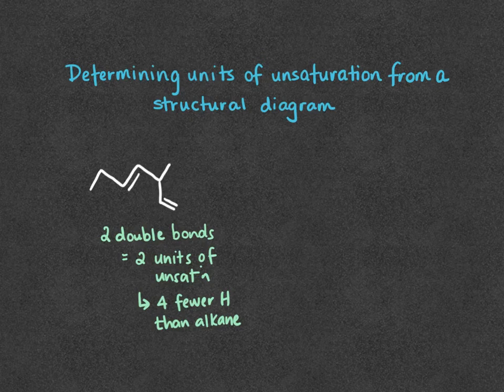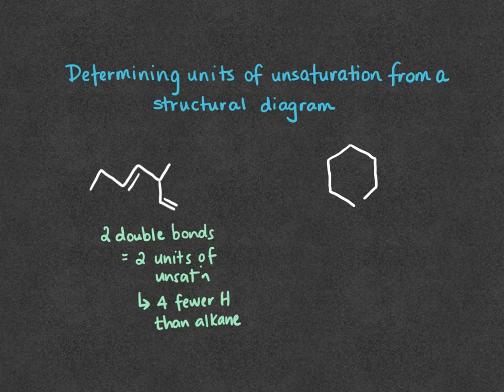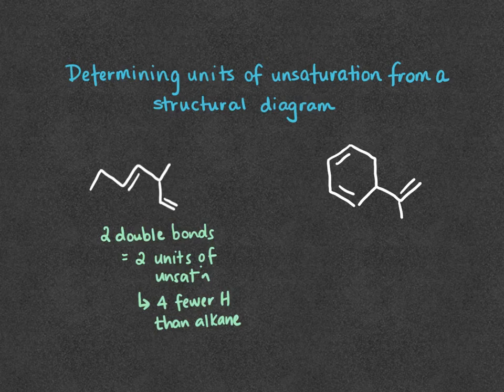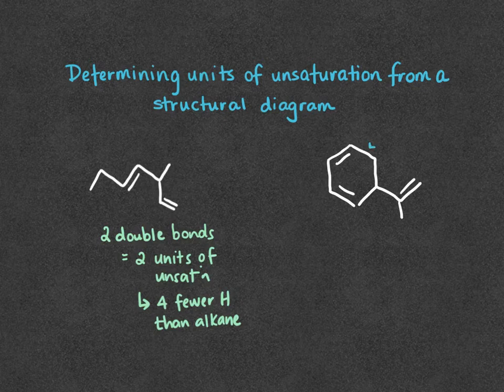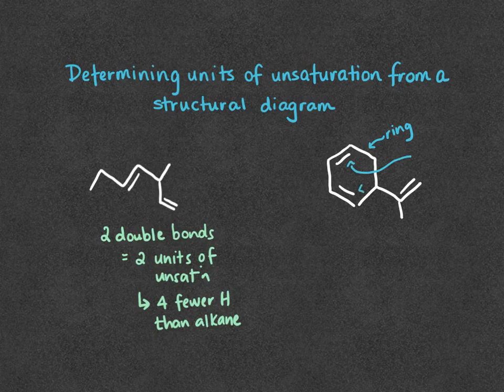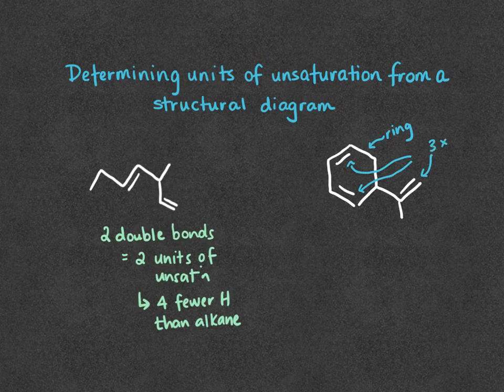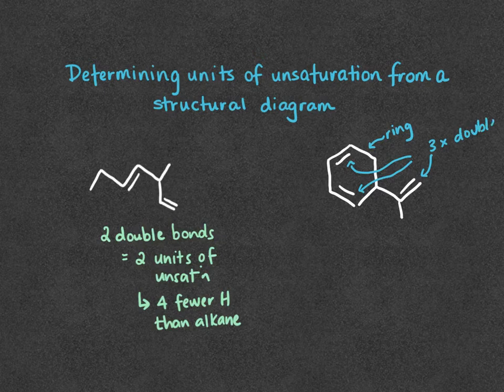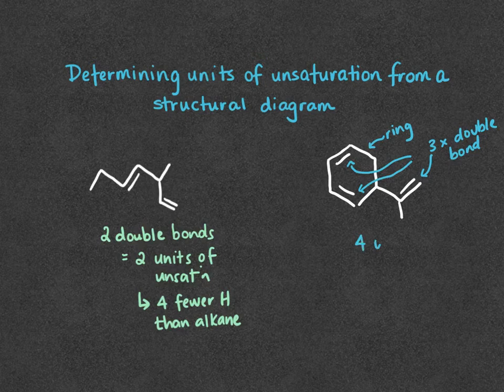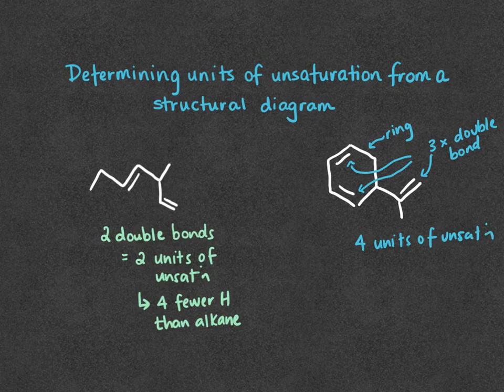We can also look at the example where we have a ring structure. In this structure, we have a ring and three double bonds. So we add these together, and that gives us four units of unsaturation, which is really eight fewer hydrogens than an alkane.